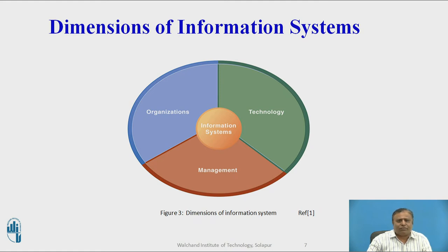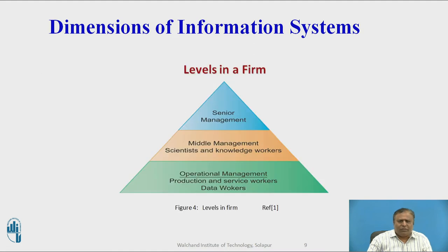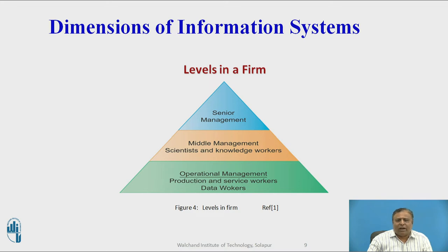Now we are going to discuss the organizational dimension of information systems. This is the structure in which different levels and specialties exist, including a hierarchy of authority and responsibility. Senior, middle, and operational management, as well as knowledge and service/data workers, are part of this structure. The upper level is senior management. Middle-level management consists of scientists, architects, engineers, and constructors — known as knowledge workers. Operational management, the bottom level, includes production workers, service workers, and data workers.